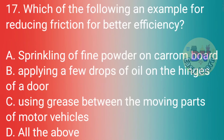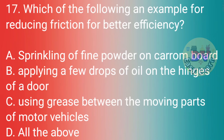Q17. Which of the following is an example of reducing friction for better efficiency? Correct answer: All the above — sprinkling of fine powder on carom board; applying a few drops of oil on the hinges of a door; using grease between the moving parts of motor vehicles.